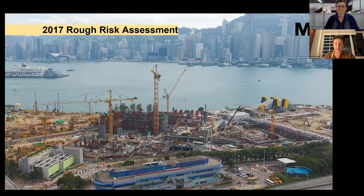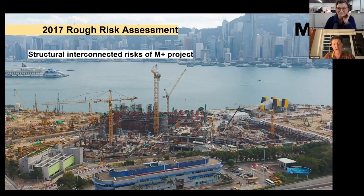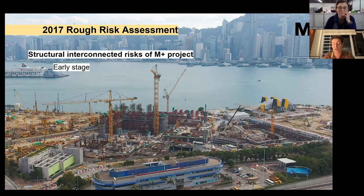Let me take you back to 2017 when I started working at M+. The picture in the background shows the state of the M+ building at the time, looking forward to the opening scheduled back then for 2019. I had initiated a rough risk analysis and will briefly present its results, focusing on what I'm naming the structural risks. I listed four interconnected ones, starting with the obvious risk related to the early stage of the project. Staff had just reached 62 members, among which six conservators, with rather large diversity of museum cultures, five of them including me just recently hired. Half of the M+ team was constituted by curators, and there was logically a lack of workflows or policies. The scale of the M+ building created its own logistic and operational risks.